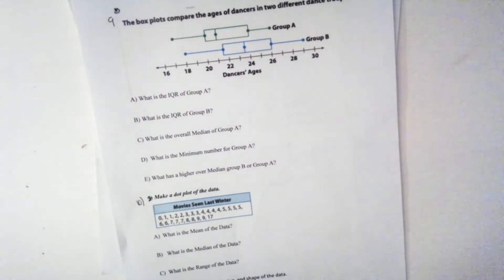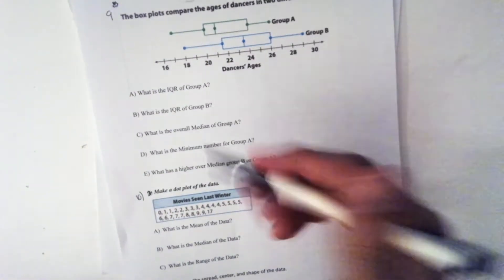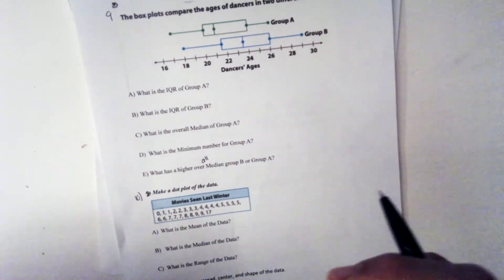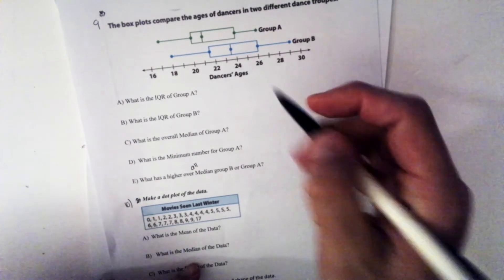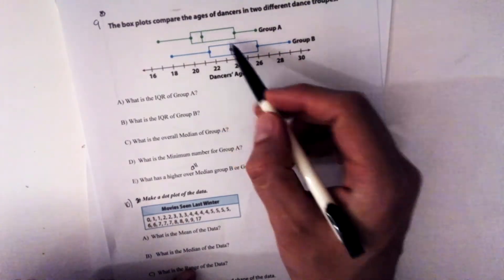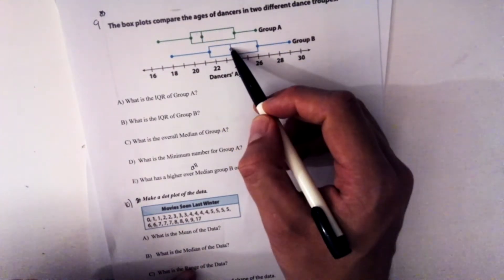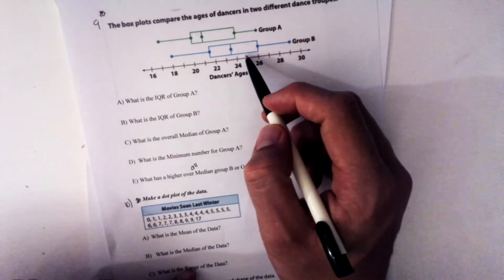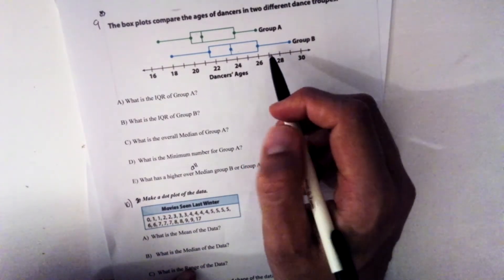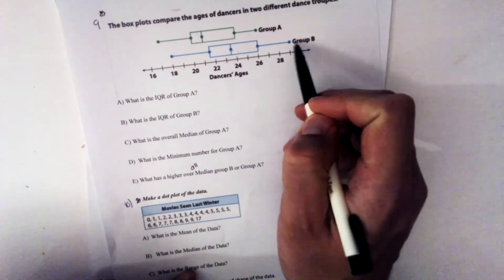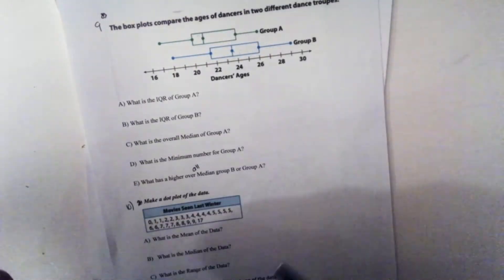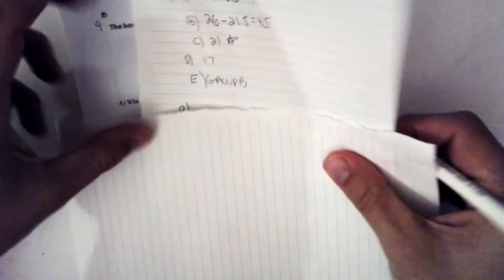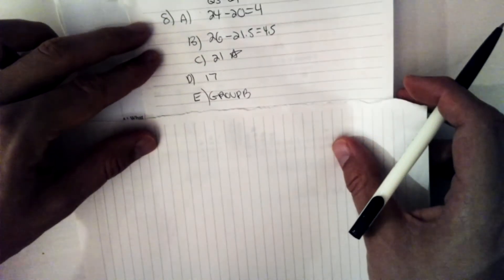What is a higher overall median, group B or group A? So I'll look here at the two groups. And the group that has the higher number on the number line is going to be my correct answer. So that looks like it's going to be group B. Group B has the higher overall median.